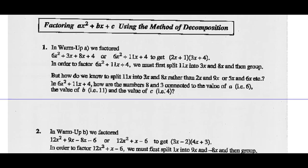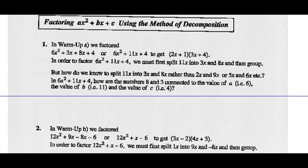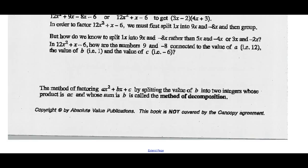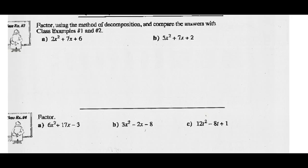Let's look at factoring AX squared plus BX plus C using the method of decomposition. We're going to go straight to the method. To factor using decomposition, we ask ourselves: what two numbers have a sum of the middle term, 7, and a product of the first times the last, 12? What two numbers add to 7 and multiply to 12?